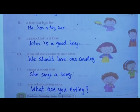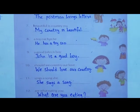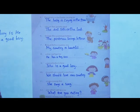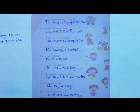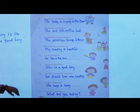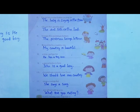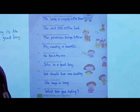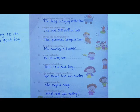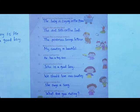Write down these sentences. Now we will read once again from the fourth one: 'The baby is crying in the farm. The ant sits on the leaf. The postman brings letters. My country is beautiful. He has a toy car. John is a good boy. We should love our country. She sings a song. What are you eating?'